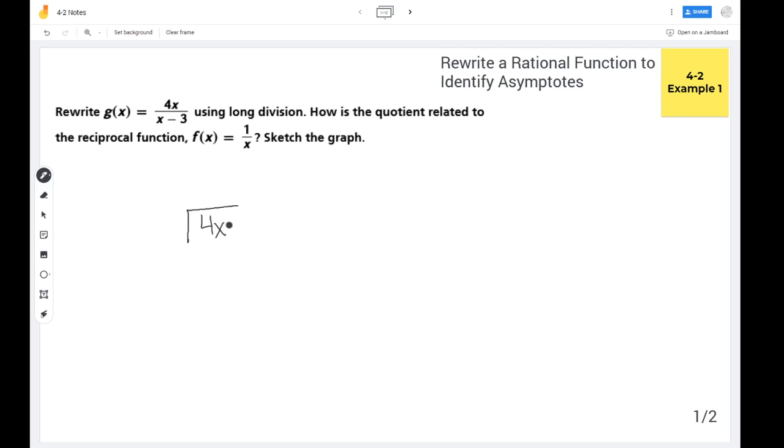Remember when you do long division, the top of the fraction goes inside the division house and the bottom of the fraction goes outside. We have to ask ourselves, what do I need to multiply times x to make it equal 4x? Well that would be a 4. So 4 times x is 4x. And 4 times negative 3 is negative 12. Now it might help you visually to put a plus zero here just because it's technically a missing term, but it's not necessarily something you have to do.